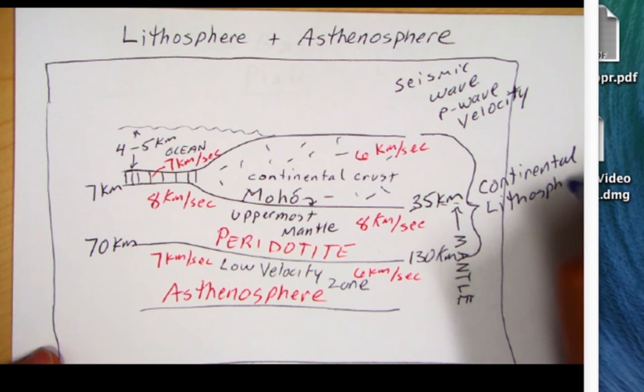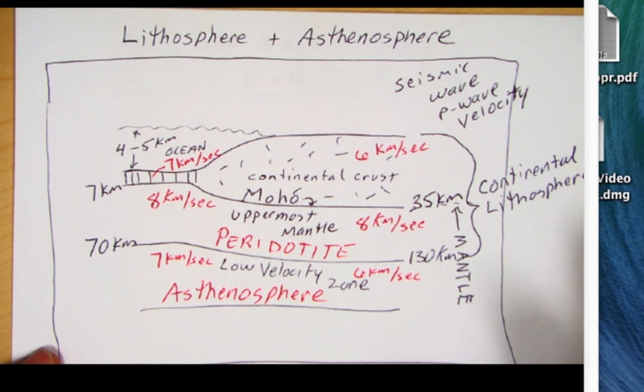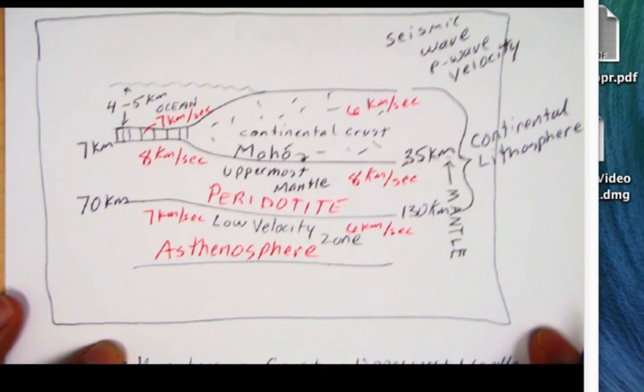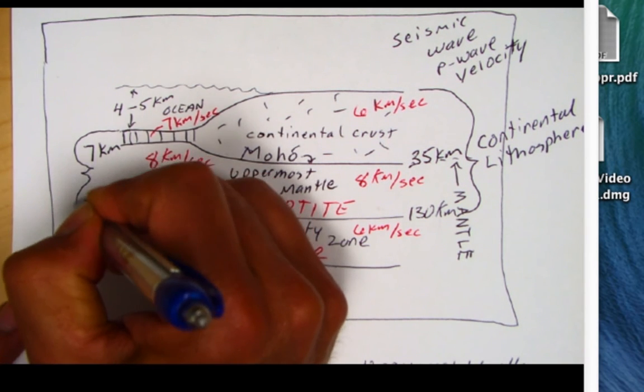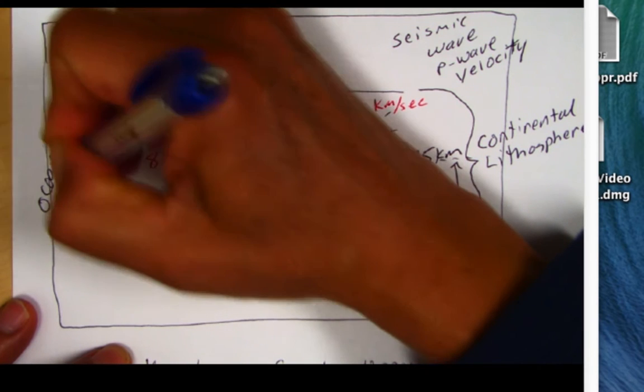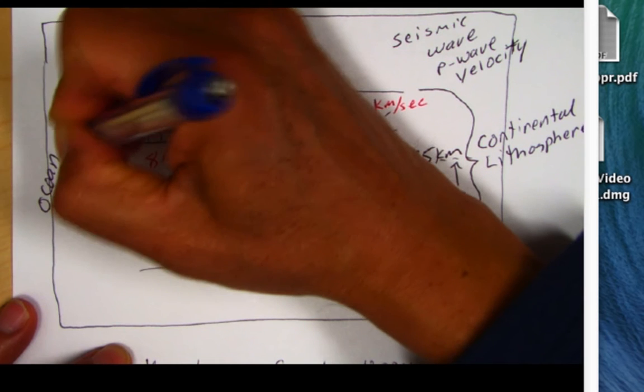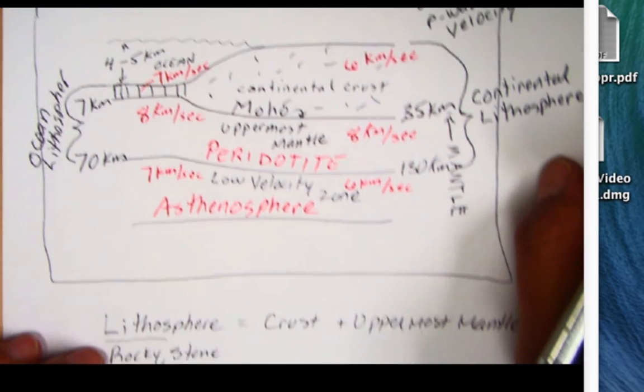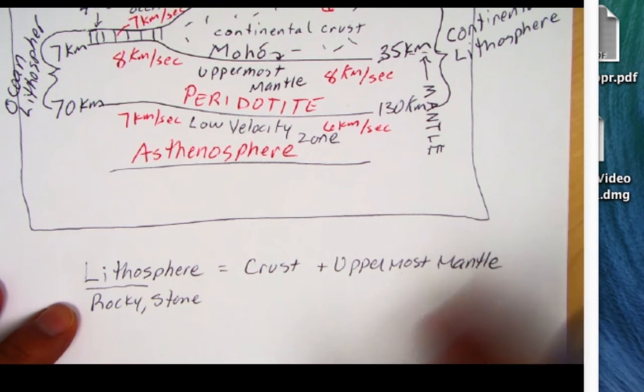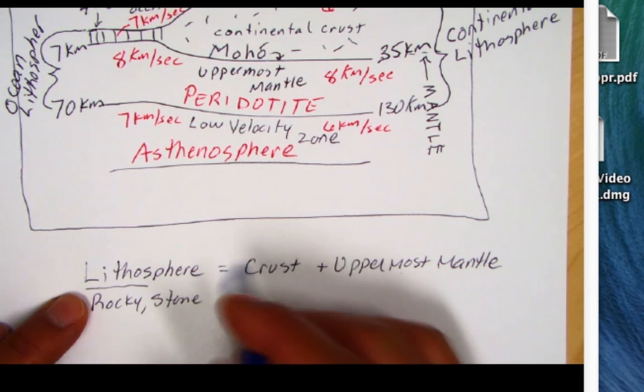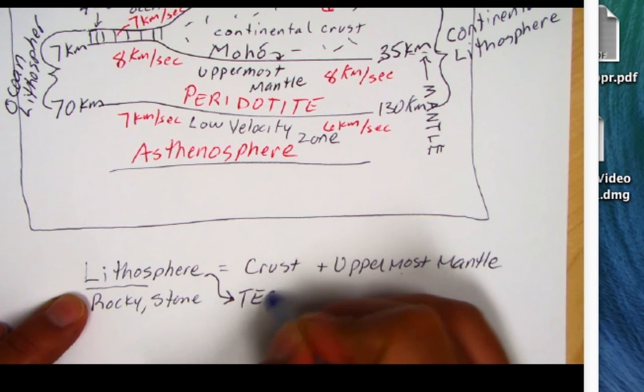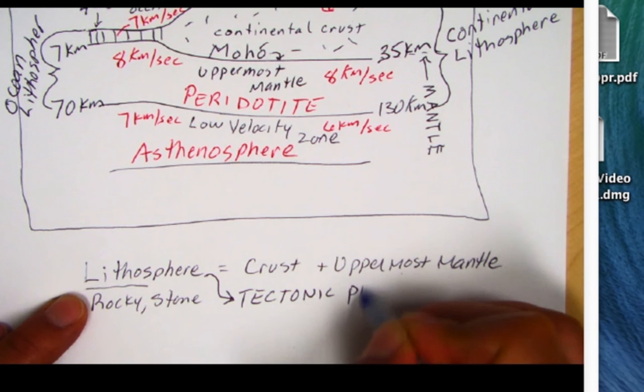And this lithosphere is basically a tectonic plate. In fact, let's do the ocean lithosphere. So ocean lithosphere would be this section over here. So here's continental lithosphere and ocean lithosphere. If we go back down over here, note that the lithosphere is crust and uppermost mantle. It's the rocky sphere of Earth. More importantly, this lithosphere, these are the tectonic plates.